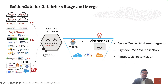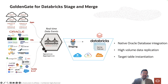With GoldenGate 23 AI, we are introducing a new connector for directly ingesting messages into Databricks delta lakes with GoldenGate. The Databricks handler is developed with a stage and merge data flow architecture, and GoldenGate Databricks delivery provides unique capabilities for your delta lake ingestions.